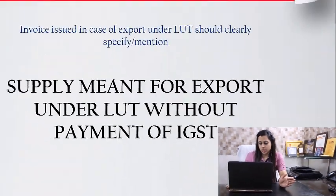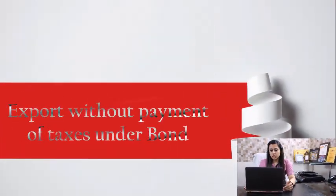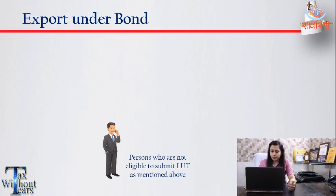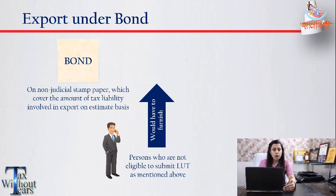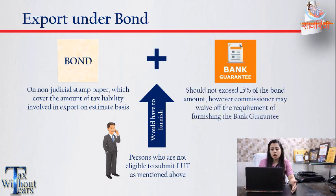There is an invoicing requirement when exporting using LUT — do mention 'supply meant for export under LUT without payment of IGST.' Moving on to the second method without payment of GST, it is making exports under bond. Those persons who are not eligible for the LUT are required to furnish the bond on non-judicial stamp paper for the amount of tax liability on that particular export, along with a bank guarantee which in any case will not be more than 15% of the bond amount.